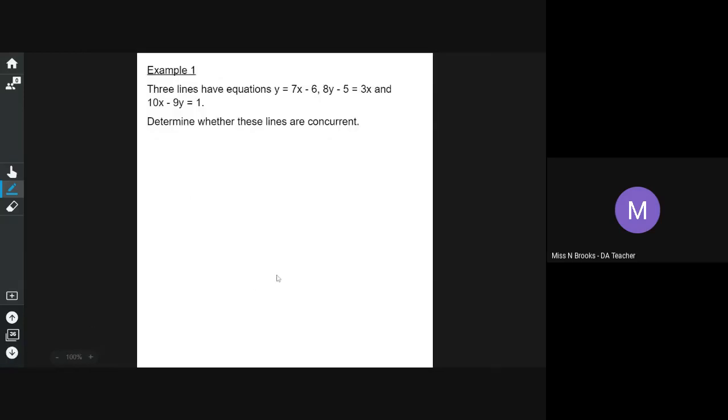So our example here is we've got three lines that have equations y equals 7x minus 6, 8y minus 5 equals 3x, and 10x minus 9y equals 1. And we need to determine whether these lines are concurrent.